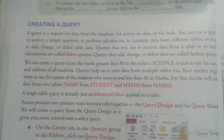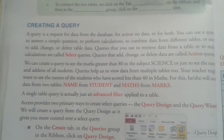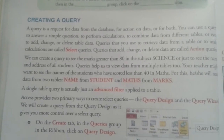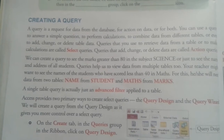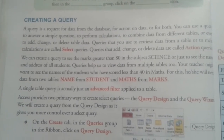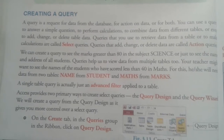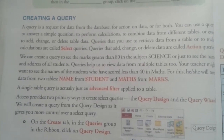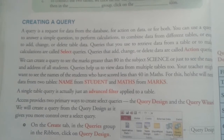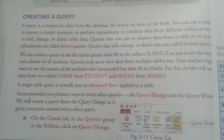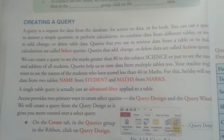Whenever we are going to add, change, or delete data, it is called an action query. We can create a query to see marks greater than 80 in the subject Science, or just see the names and addresses of all students. Queries help us to view data from multiple tables too — whenever we need to find data across multiple tables, a query helps us.